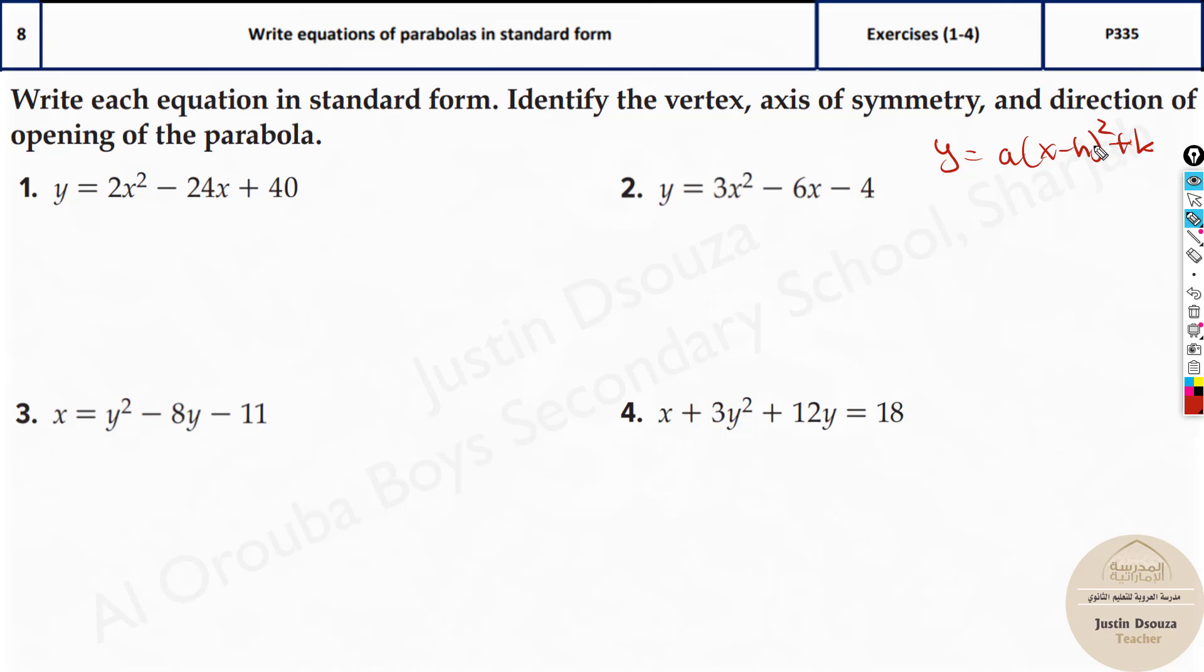Why do we need the standard form? We can easily get the h and k, which are the vertex values. h and k can be easily found out. Now this actually needs to be done by the completing the square method. But since this is in the MCQ part, I will tell you a shortcut. But you need to know all the four options first. So let us just look into the answers.